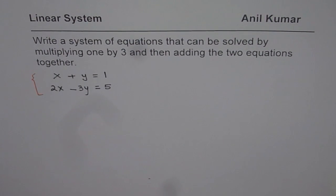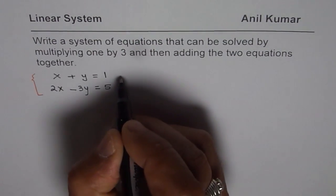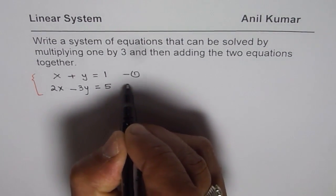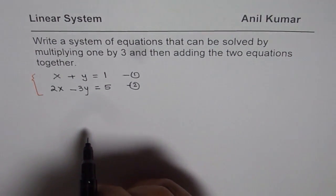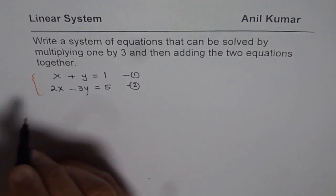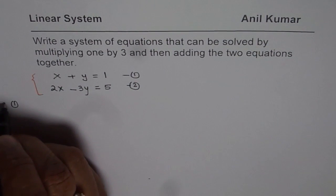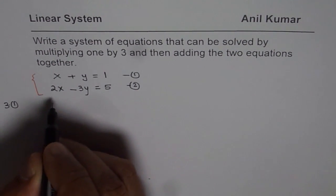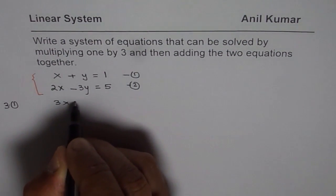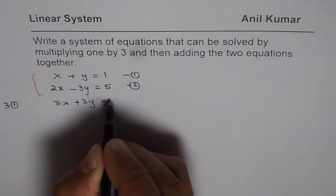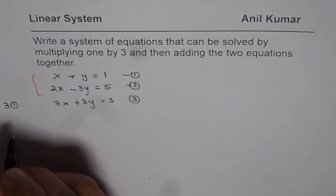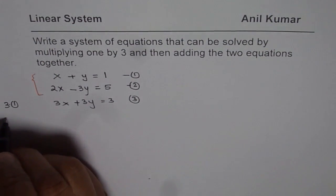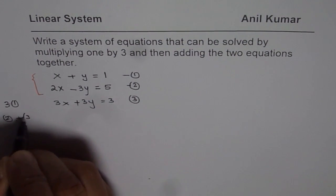I hope you get the concept. This is the tricky part. Now let us solve the equation. We can multiply equation 1 by 3, so 3 times equation 1 gives us 3x plus 3y equals 3. We will call this equation 3. Now we need to add equation 2 and equation 3.